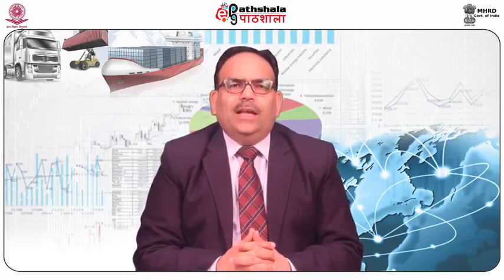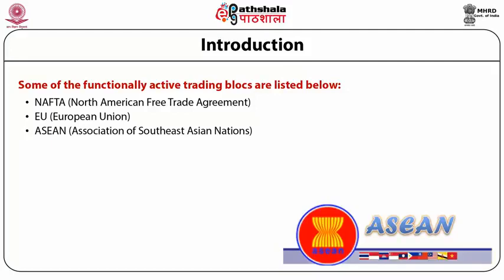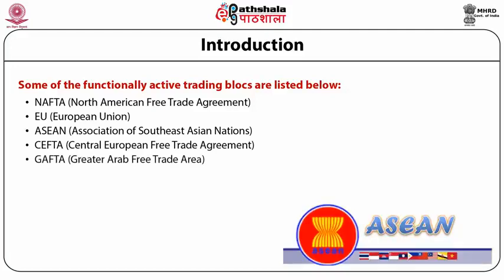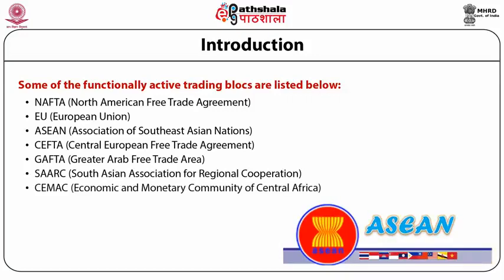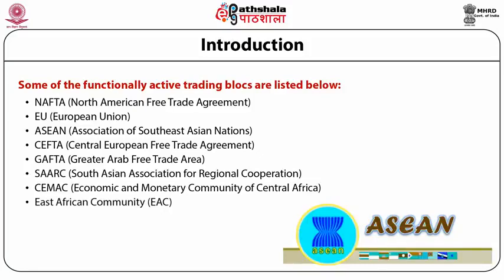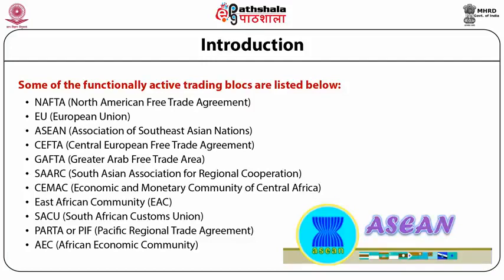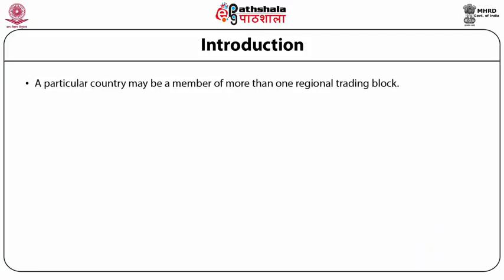Different regional blocks have come up in the period of economic liberalization in various parts of the world. Some of the functionally active trading blocks are: North American Free Trade Agreement (NAFTA), European Union, Association of Southeast Asian Nations, Central European Free Trade Agreements, Greater Arab Free Trade Area, South Asian Association for Regional Cooperation, Economic and Monetary Community of Central Africa, East African Community, South African Customs Union, Pacific Regional Trade Agreement, African Economic Community, and Central American Common Market.